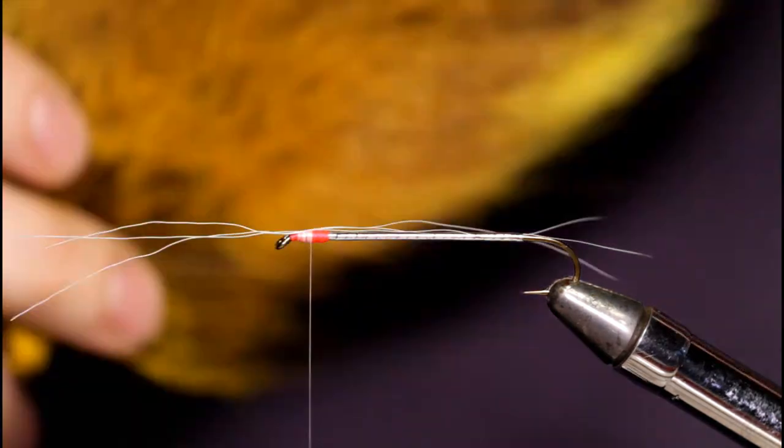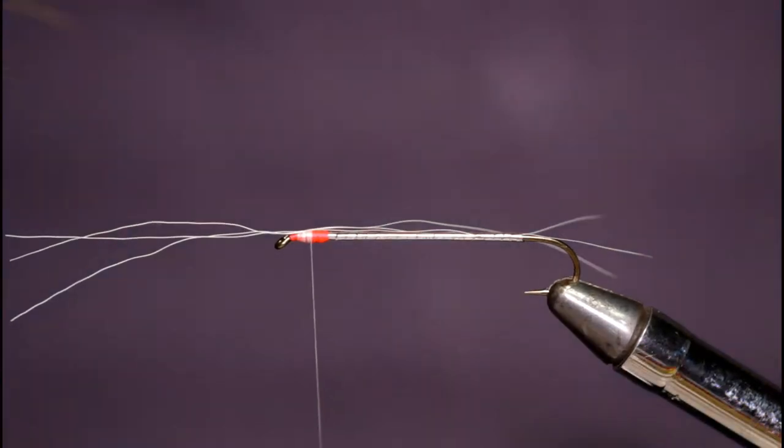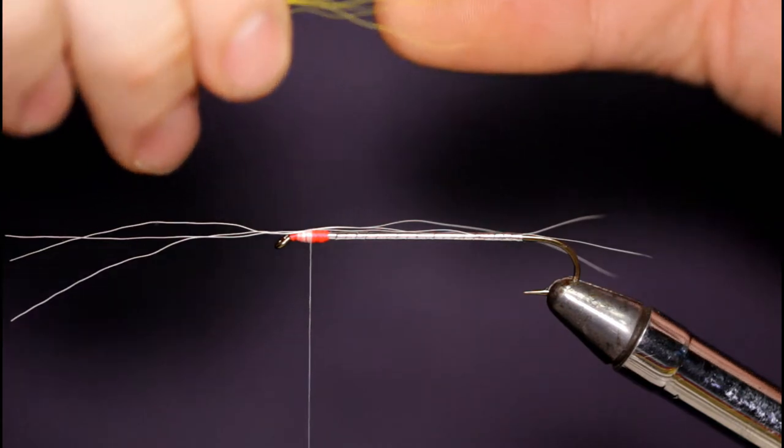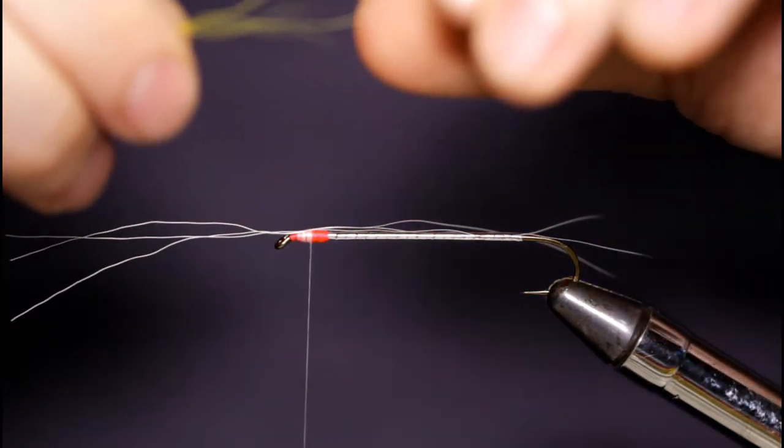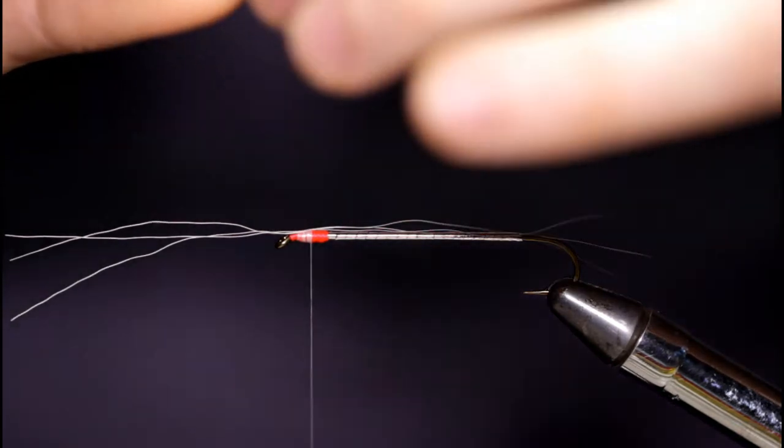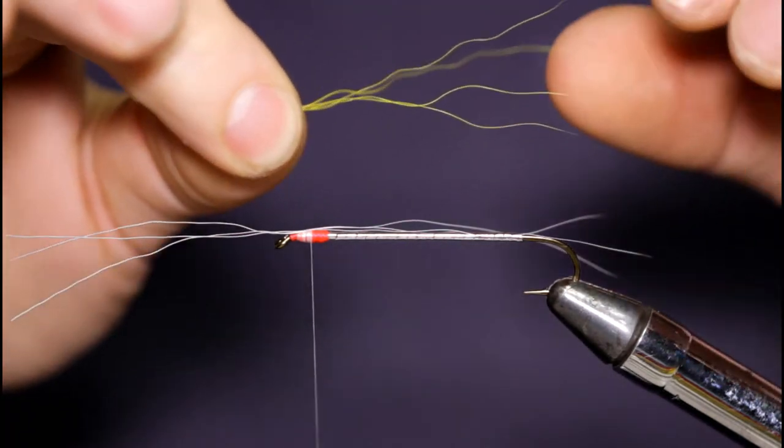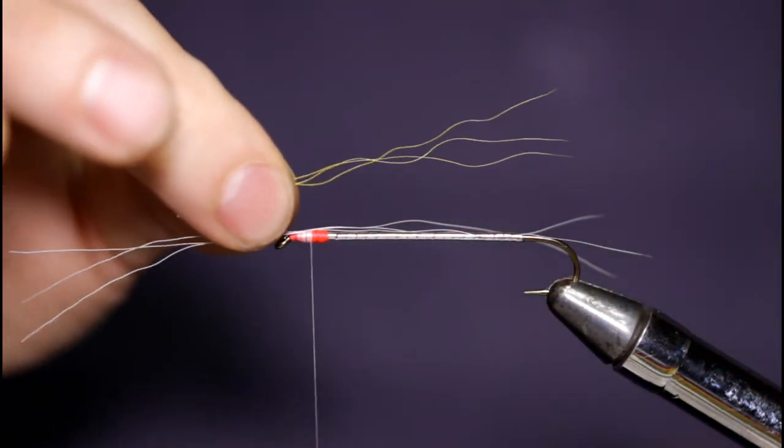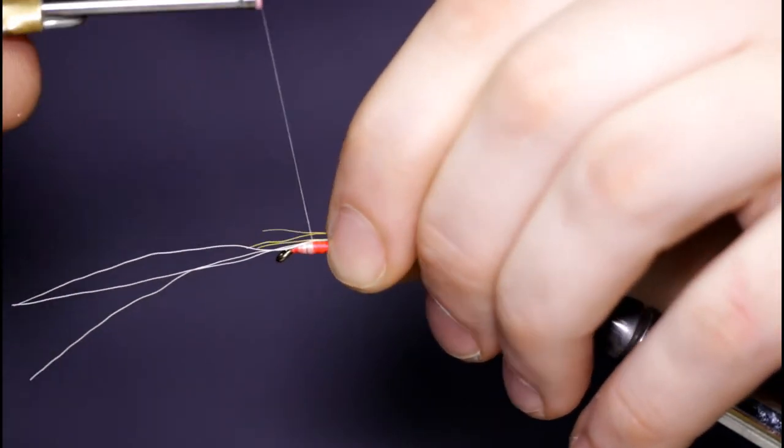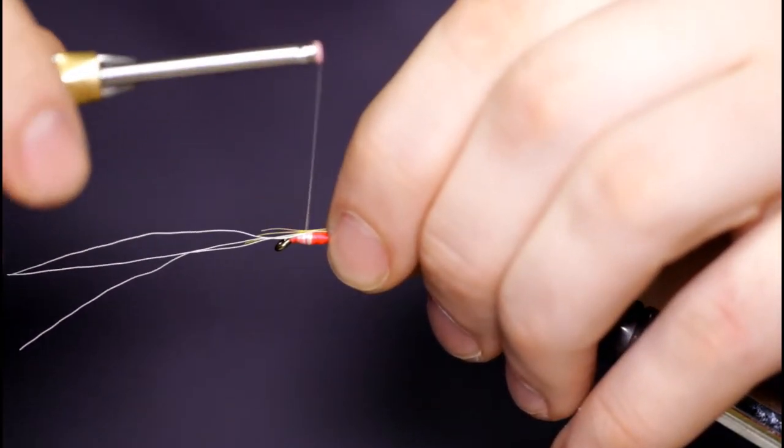The next color is going to be some dyed yellow bucktail. I'm going to come in, separate the short fibers, pull out the extra long fibers. Once I've got this nice and sparse and level, I will set it on top and repeat the tie in process. A few turns over the top, wrapping forward towards the hook eye, and bring my thread right back to where I started.